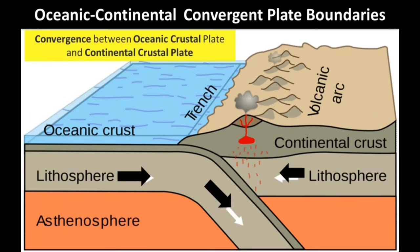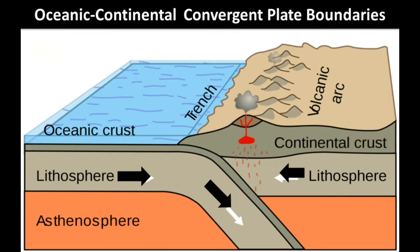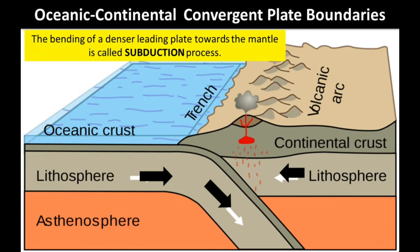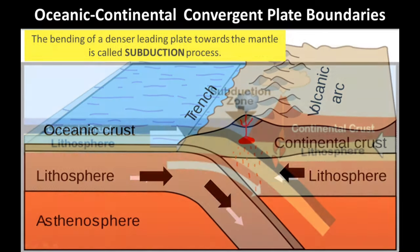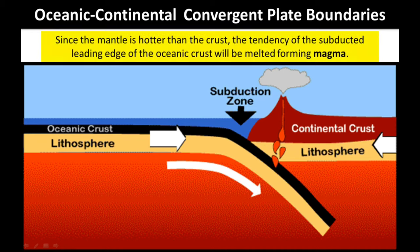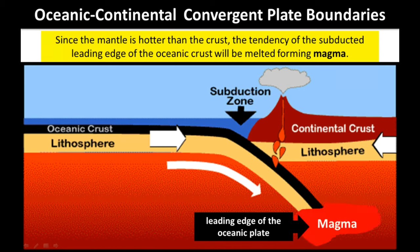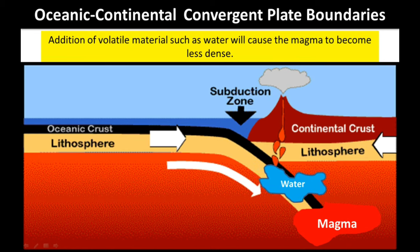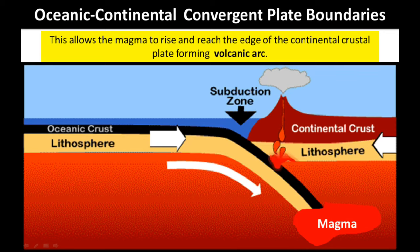This figure shows the convergence between an oceanic crustal plate and a continental crustal plate. As two different plates collide, the leading edge of the oceanic plate bends towards the mantle since it is denser than the continental plate. The bending of the denser plate towards the mantle is called the subduction process. Since the mantle is hotter than the crust, the subducted leading edge of the oceanic crust will be melted, forming magma. Addition of volatile materials such as water will cause the magma to become less dense.